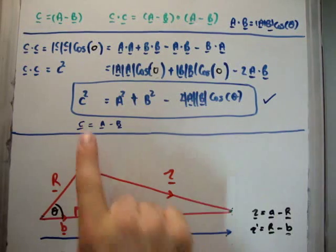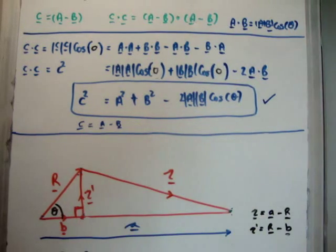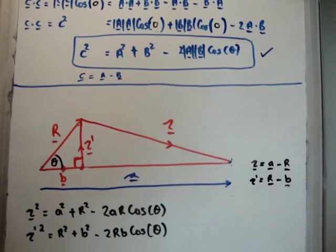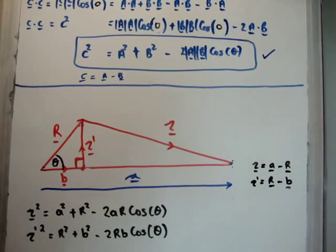So applying the law of cosines, we get the following two formulas. Straight away, if you ever have a situation where you can manipulate the vectors such that you get an A minus B, or in this case an A minus R and an R minus B, you can immediately write down the resultant squared using the law of cosines.